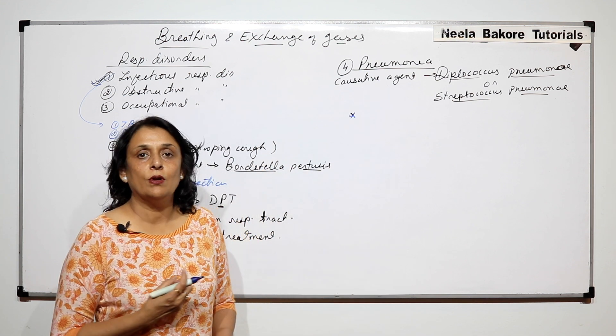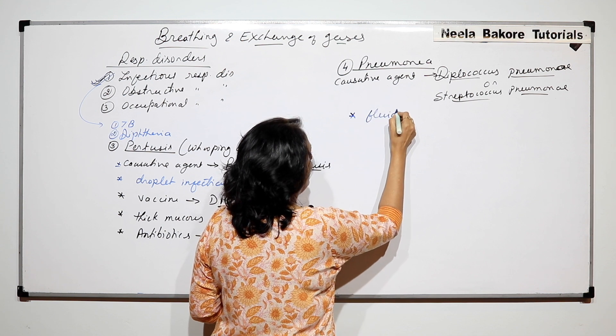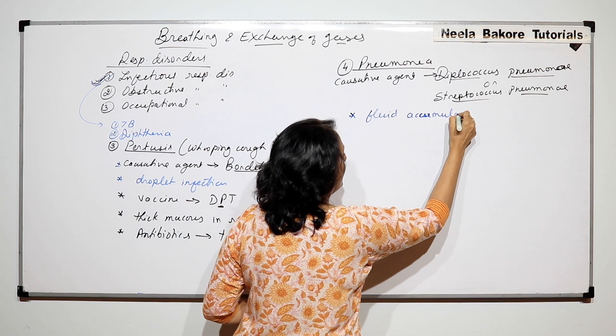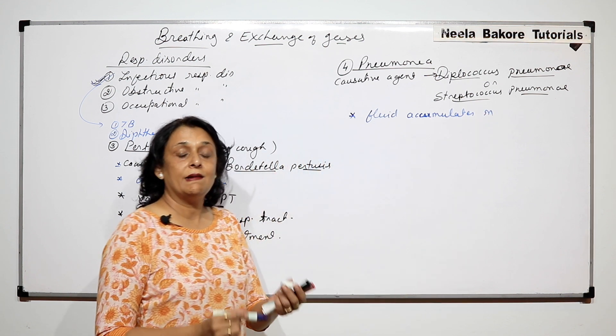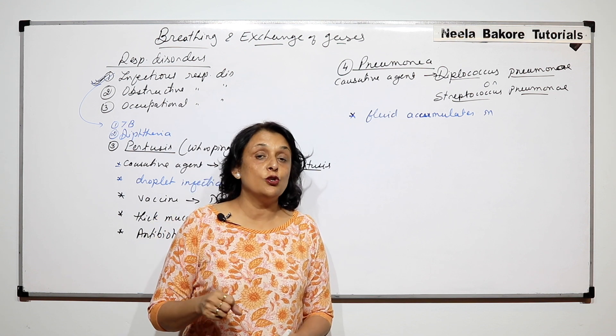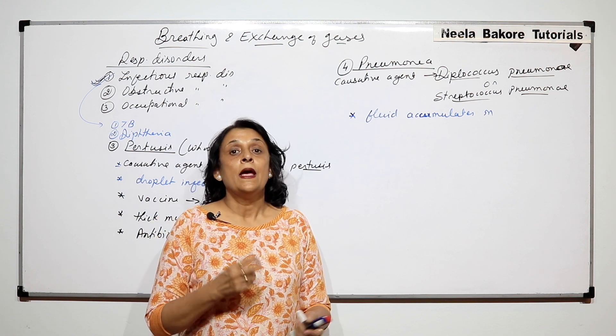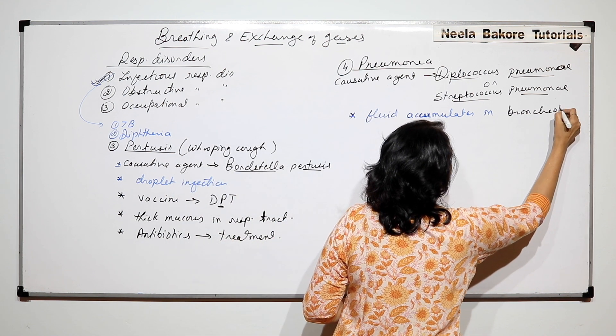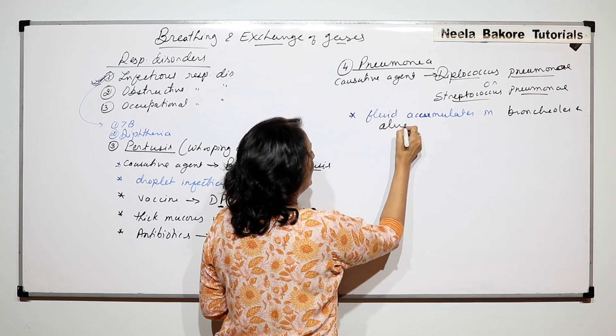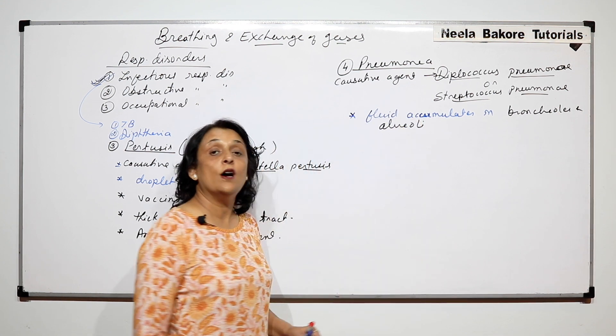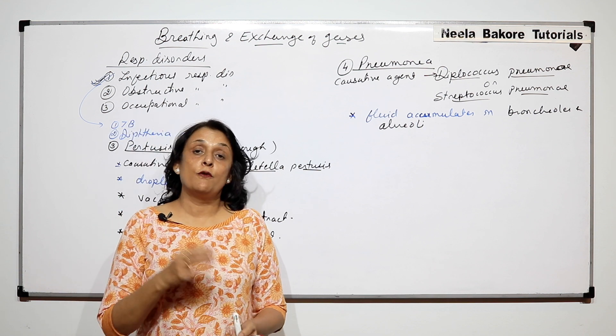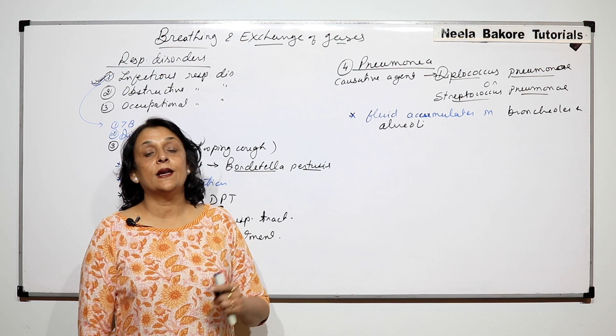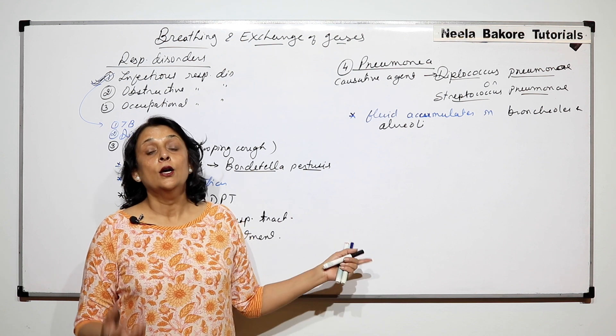In pneumonia, a fluid accumulates in our respiratory tract - in the last tubes, such as bronchioles and alveoli. In these two places, bronchioles and alveoli, a fluid accumulates in the tubes or in the alveoli, causing difficulties in breathing.